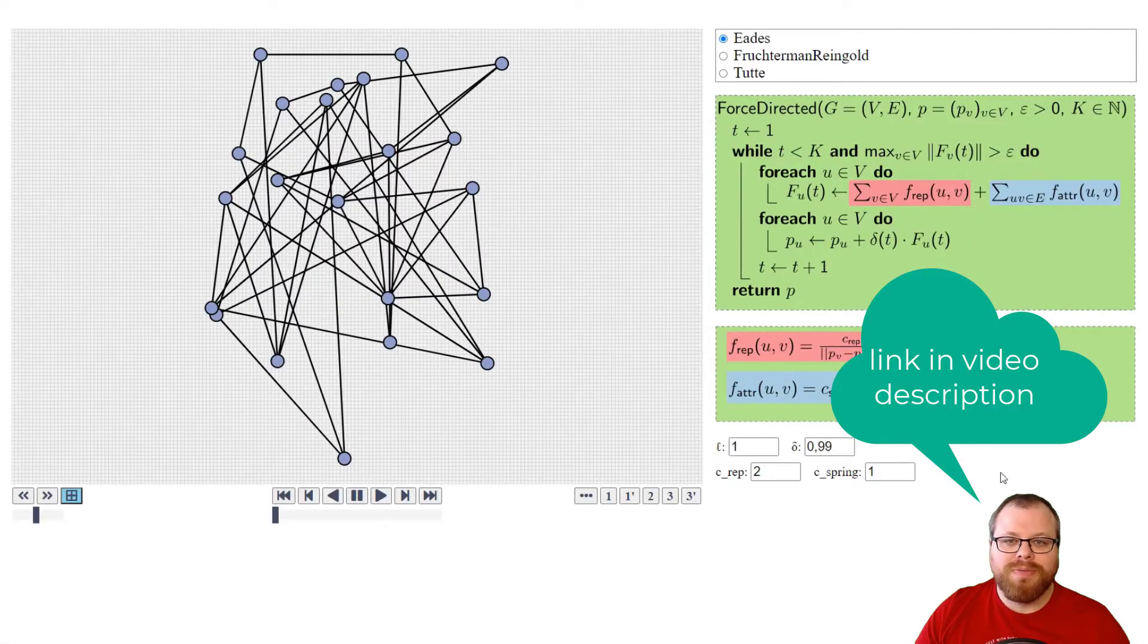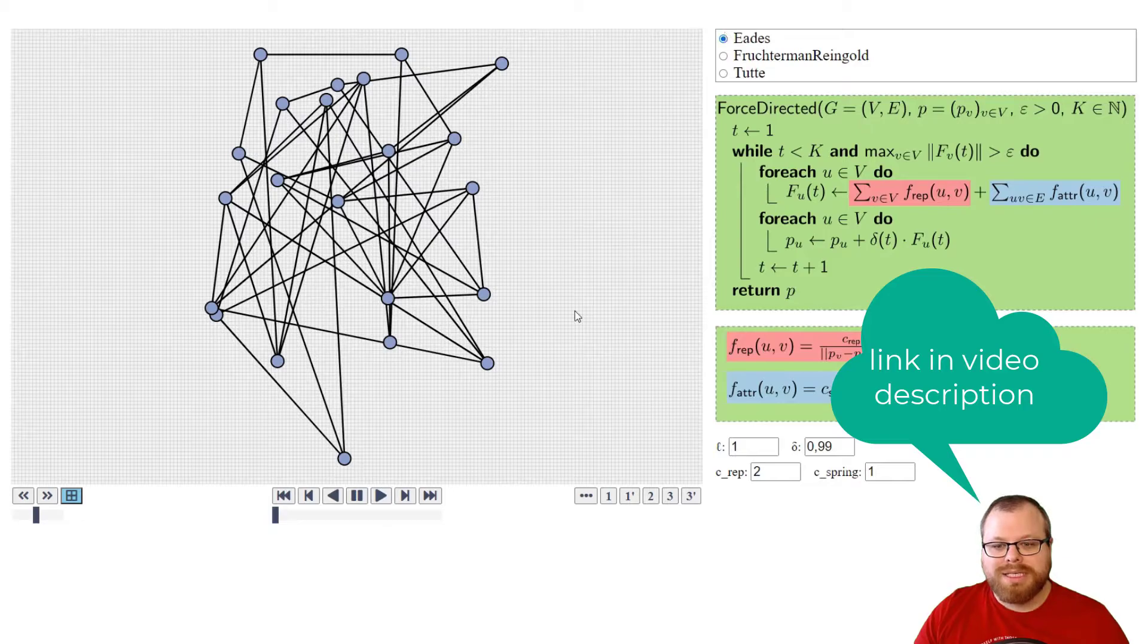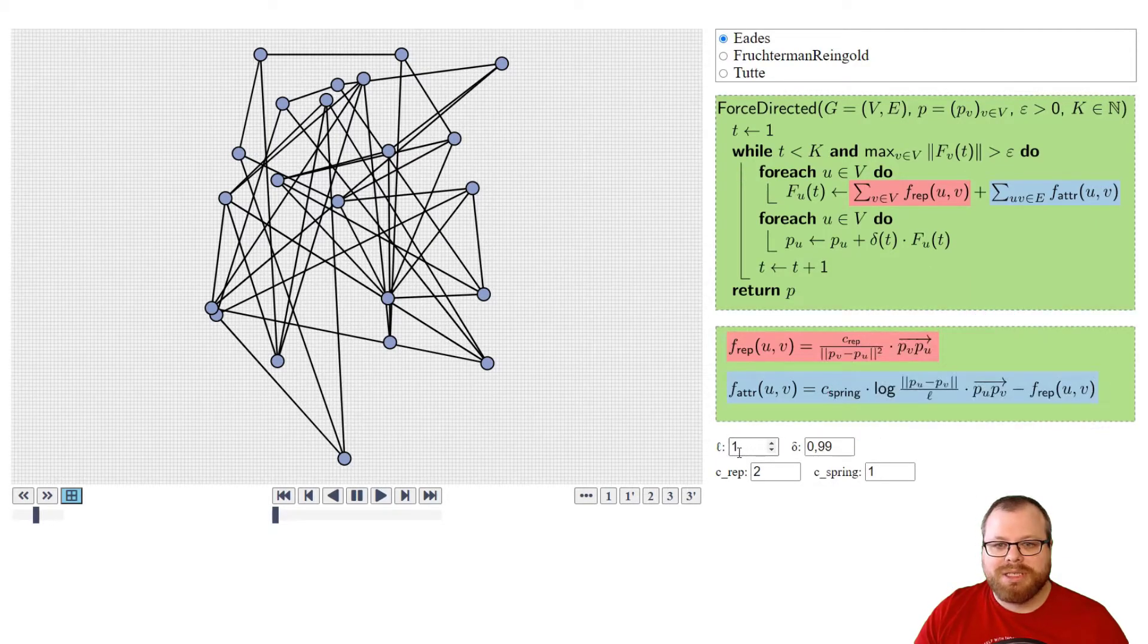Let's have a look at our demo. Here we have our Eades algorithm, and in the bottom right we can choose the parameters. So we can choose what is the edge length we want to have. I put it here as a 1. What is the repulsive constant? What is the spring constant? I put them at 2, at 1.